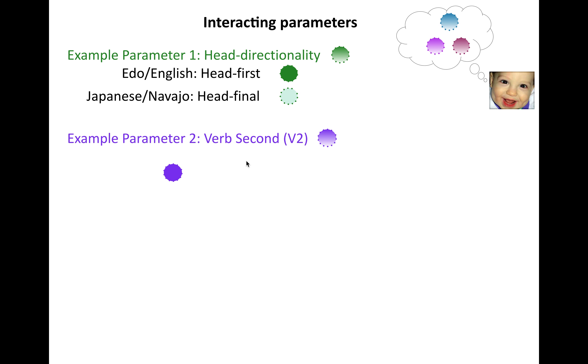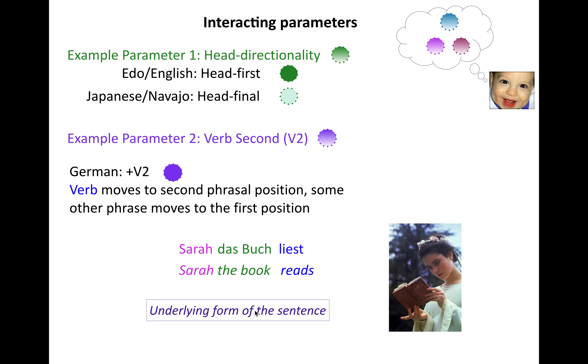Now here's another parameter that we haven't talked about before. It's called verb second. And one value of this is the kind of value plus verb second that you would see in languages like German, where the verb seems to move to the second phrasal position and some other phrase moves to the first position. So this means that you would have an underlying form of the sentence, where you have Sarah, the book reads - a subject, object, verb.